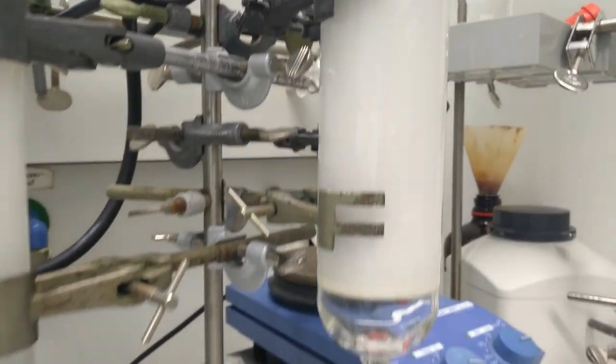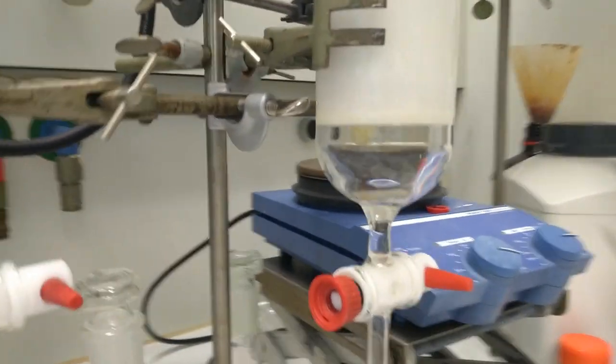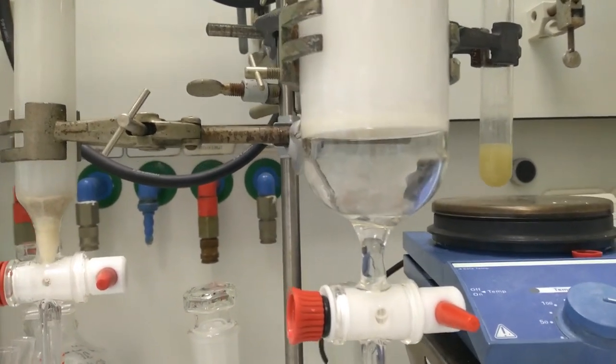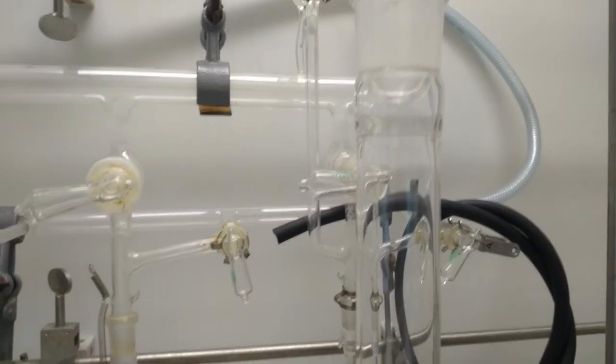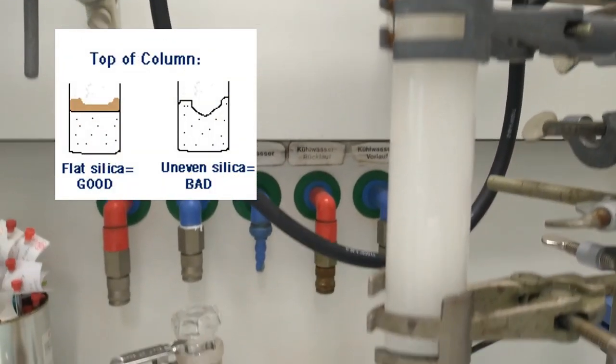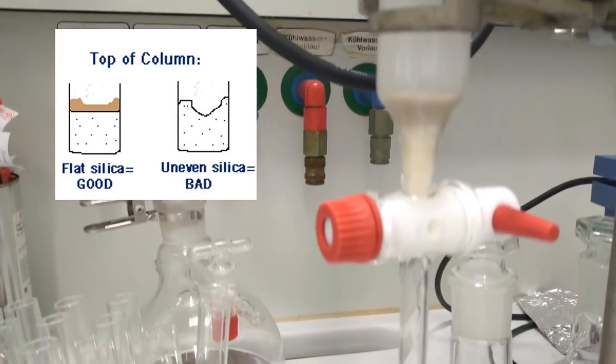Some of the bigger columns already have silica pad inside it. In that case, we need not use cotton or sand in the bottom of column. But always use either sand or cotton on the top of silica packing to avoid the disturbance on the surface.